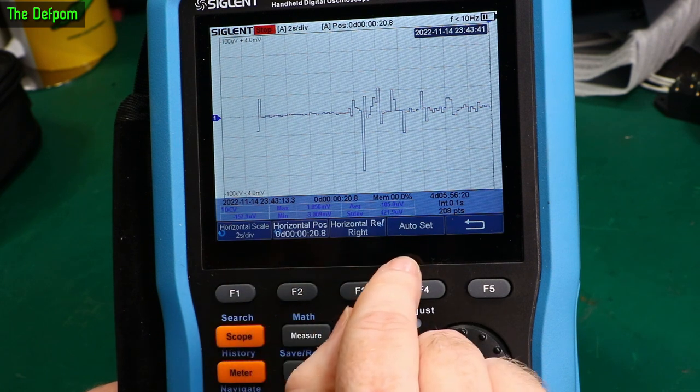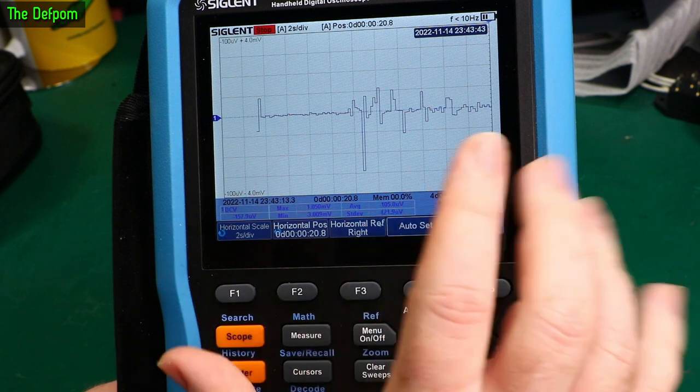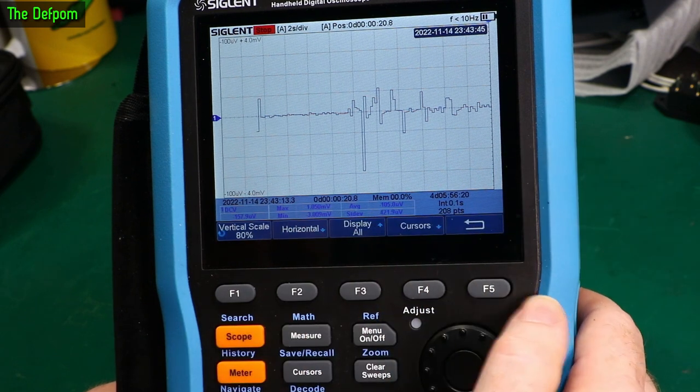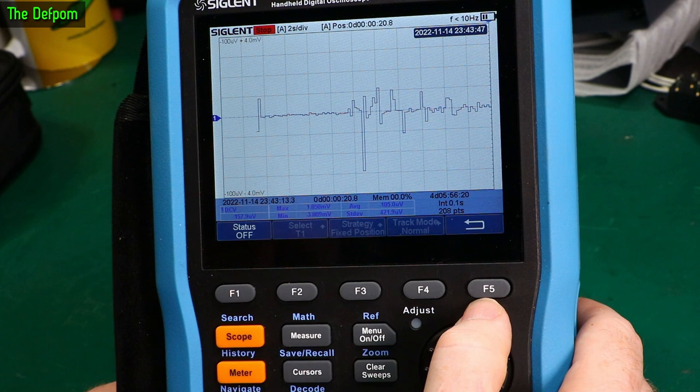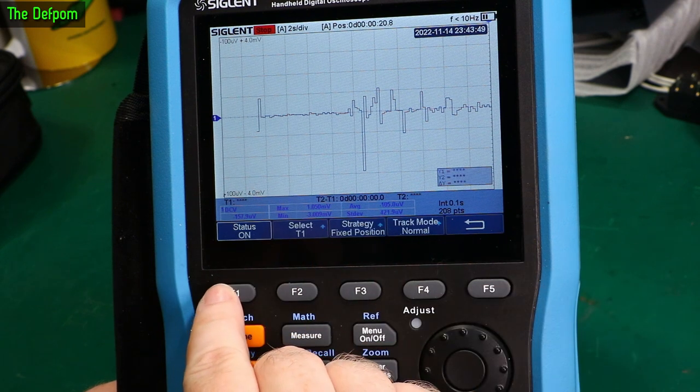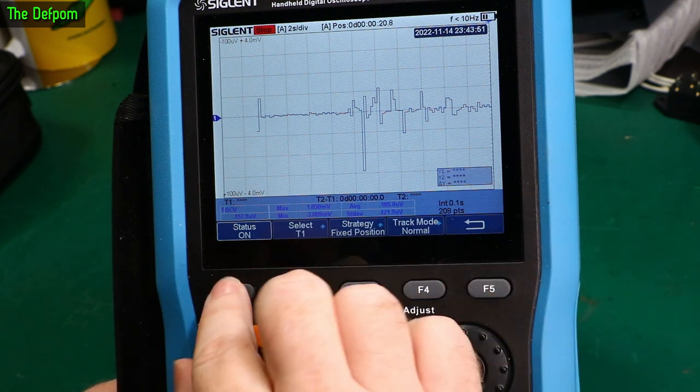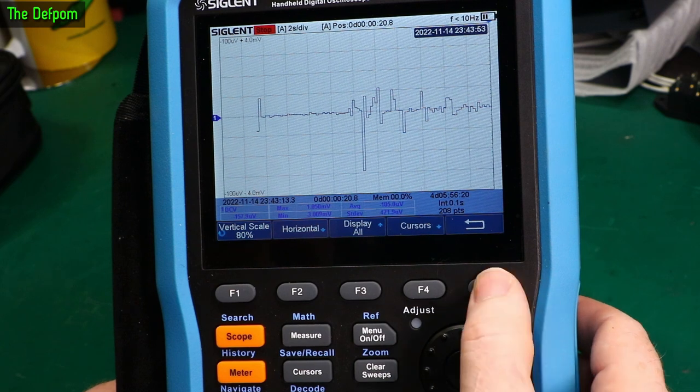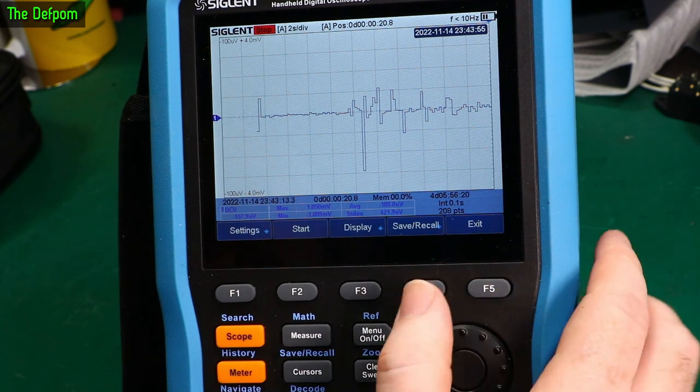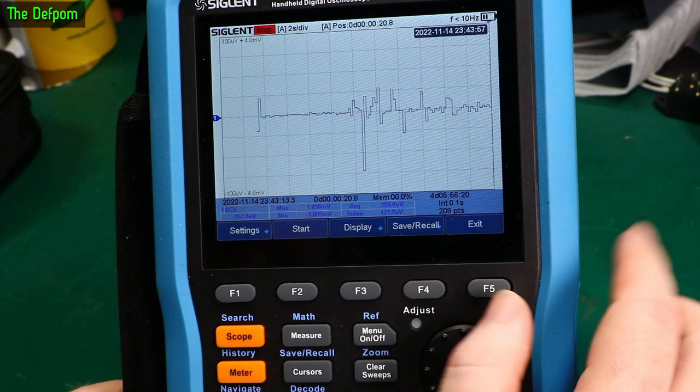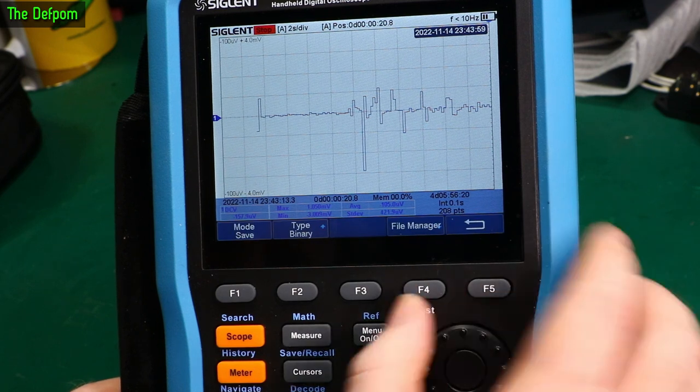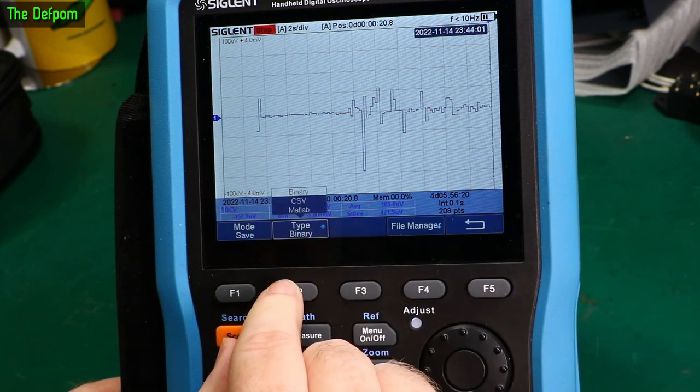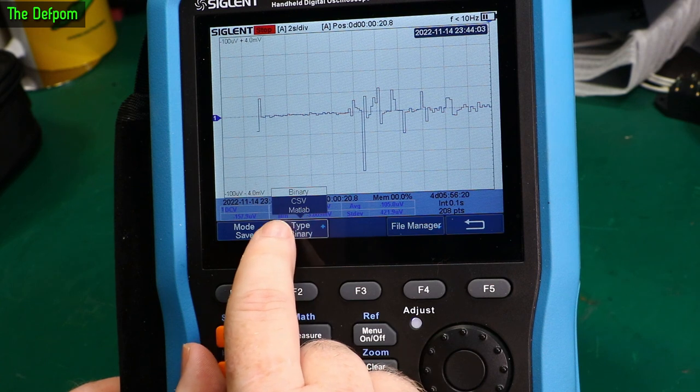You can set the time frame. Auto set which probably means it sorts itself out. Okay. Cursors. Different ones here. Turn them on and off as you want. Turn them off for now. Save and recall so you want to store it. I suppose you can do that. Yep. Save it. Save types.